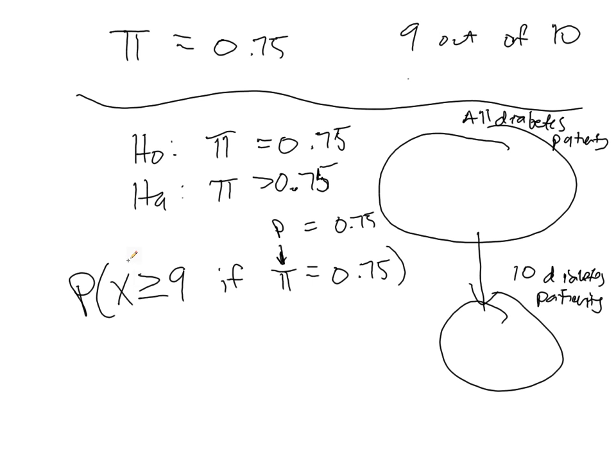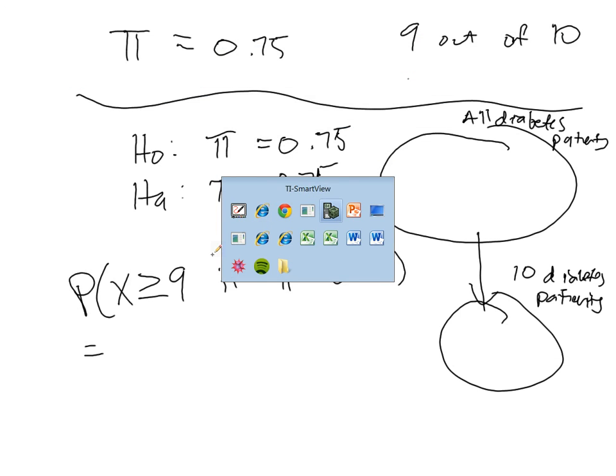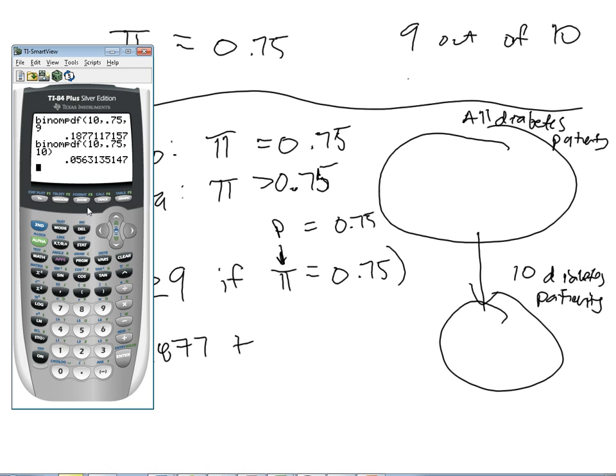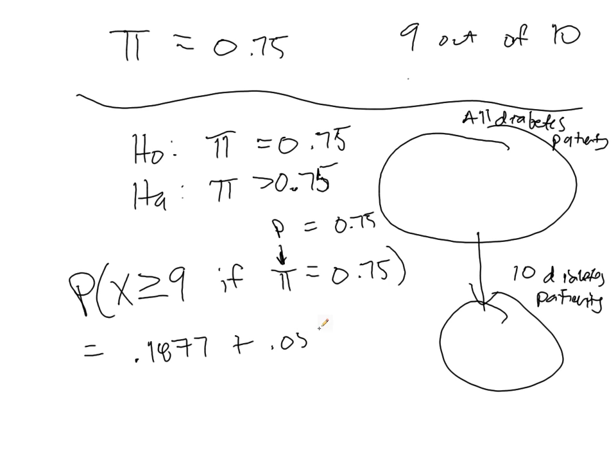How likely is it that we would see 9 or 10 successes? Well, that's going to be the probability of 9, which is 0.1877, plus 0.0563.